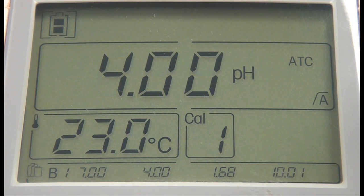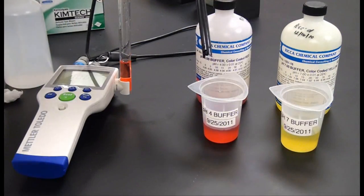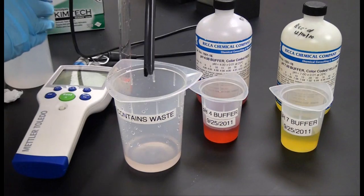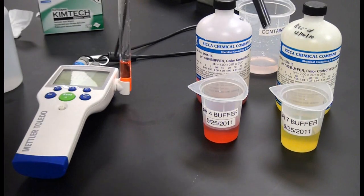After the reading is stabilized, it will show a percentage value of slope. Rinse the electrode in deionized water and place the electrode in the next calibration buffer solution, pressing the CAL button again.